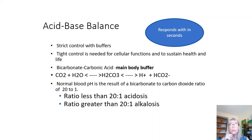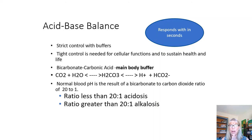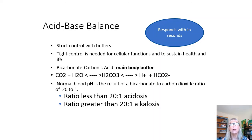A normal blood pH is a result of a bicarbonate to carbon dioxide ratio of 20 to 1. If that ratio is less than 20 to 1, you're acidotic. If it's greater than 21, you're alkalotic.